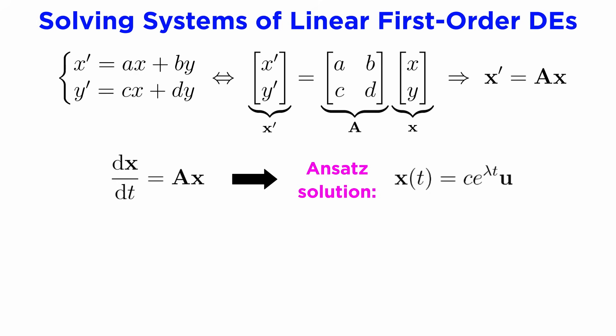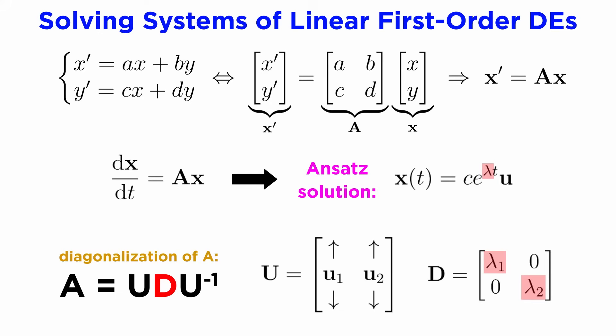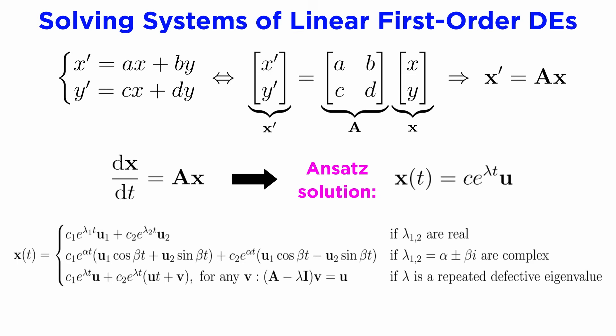By analogy, when we solved homogeneous second-order DEs, we can say that the ansatz solutions to our system of DEs will be of the form e to the lambda t times the vector u, where lambda is an eigenvalue of A found in the matrix d, and vector u is the corresponding eigenvector of A found in the matrix u. This leads to three different cases depending on the values of the eigenvalues lambda, which are worth knowing for reference.